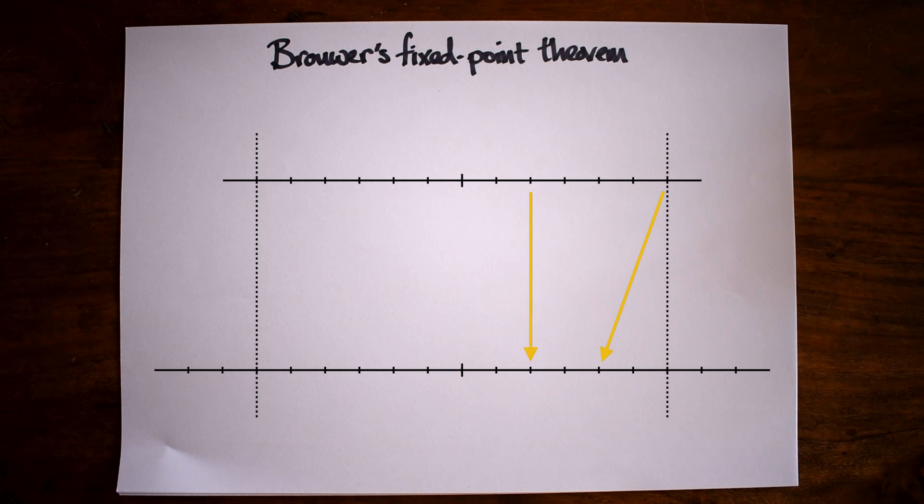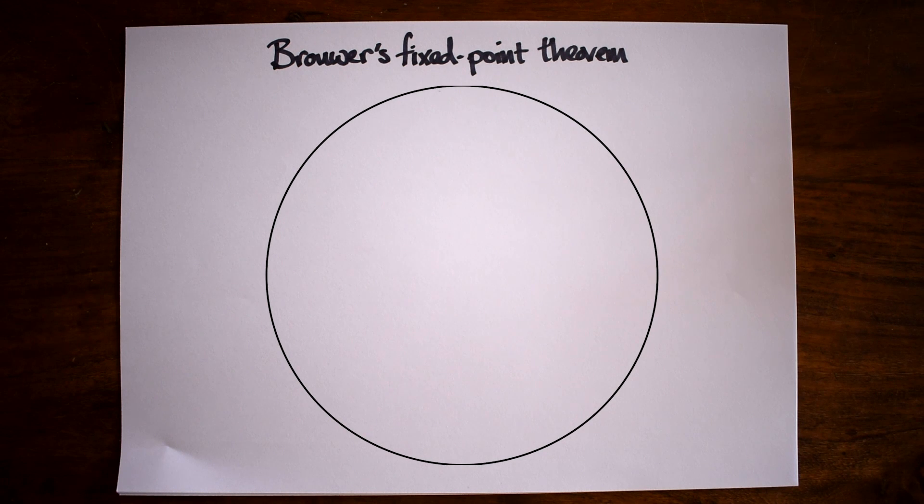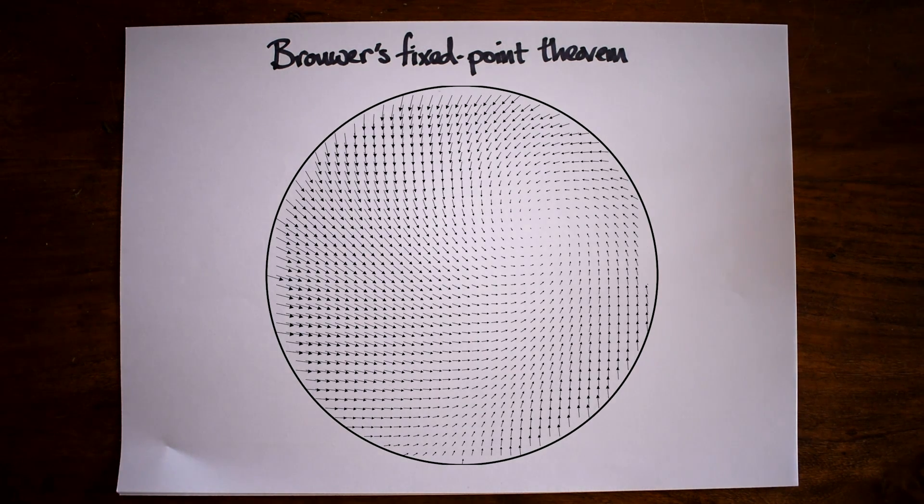somewhere along the interval it will be pointing neither left nor right, that is, straight down. Adding a second dimension makes the proof trickier. Take the set of points in the circle. To each point we can assign a vector that shows how that point will move after some transformation.